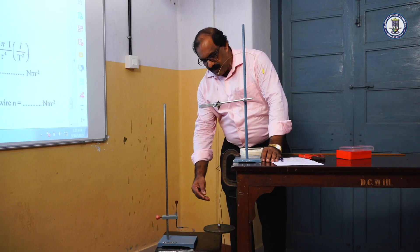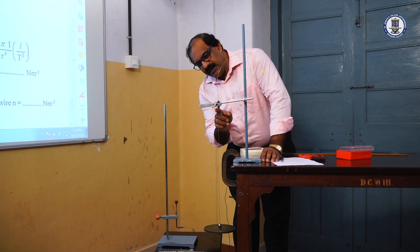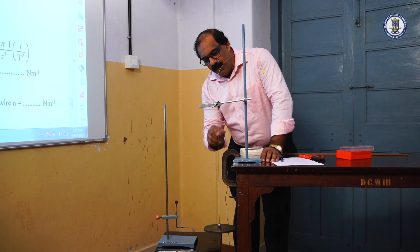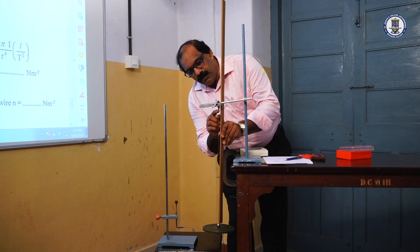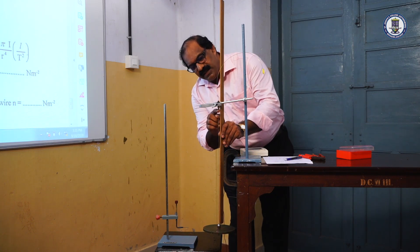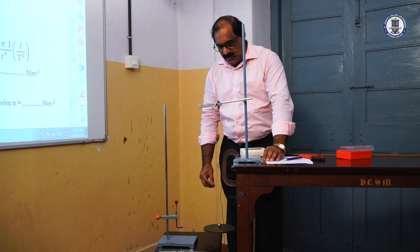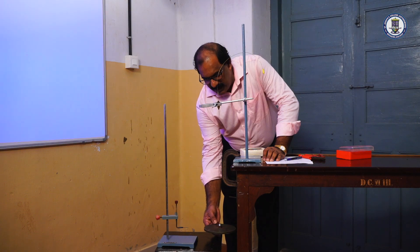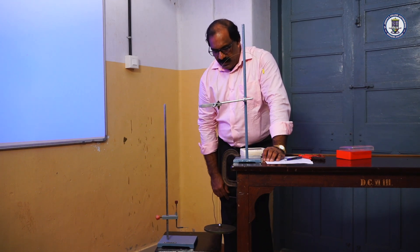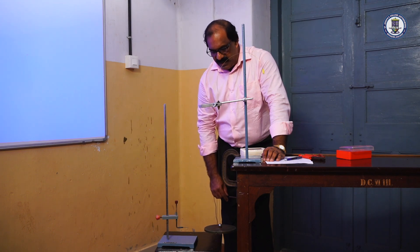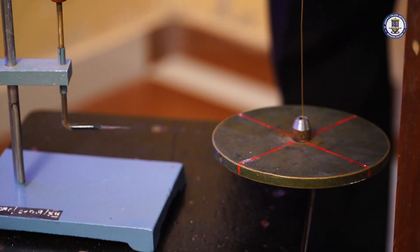This is the torsion pendulum apparatus. The heavy circular disc is suspended by means of a uniform wire between two chucks. This is chuck A and this is chuck B. Chuck A is movable, so by moving it we can vary the length. The distance between the two chucks is initially arranged for 50 cm. Before performing the experiment, we twist the circular disc slightly to one side and release it, and we can observe the circular disc performing torsional oscillations. A pointer or mark is placed here.